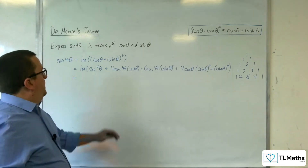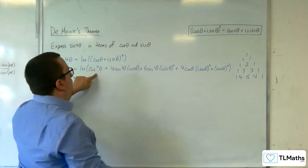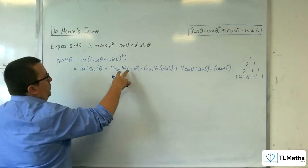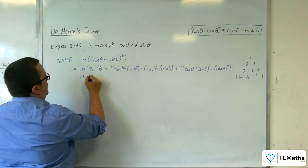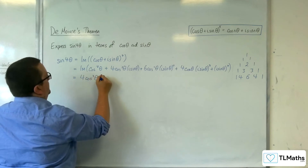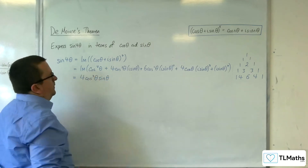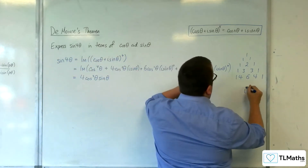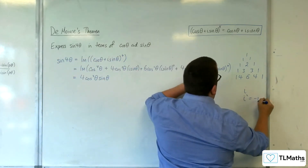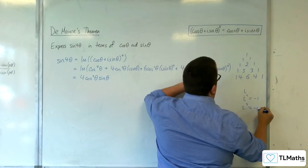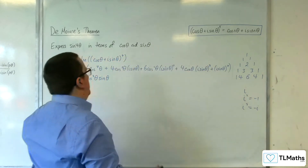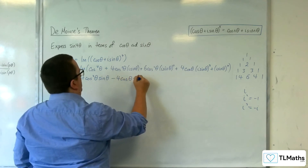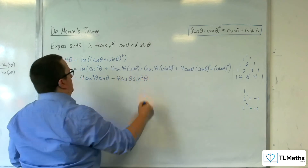I just want the imaginary parts. So the real parts — that one, that one, and that one — can go. I'm going to be left with 4 cosine cubed theta sine theta. And for the other imaginary term, I've got an i cubed there. Since i squared is minus 1, i cubed is minus i. So we've got minus 4 cosine theta sine cubed theta.